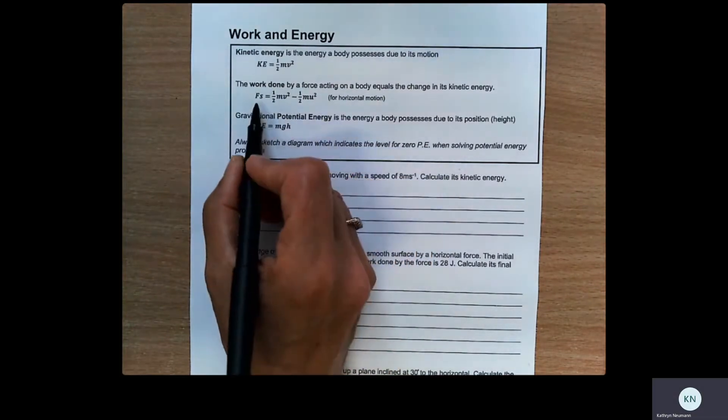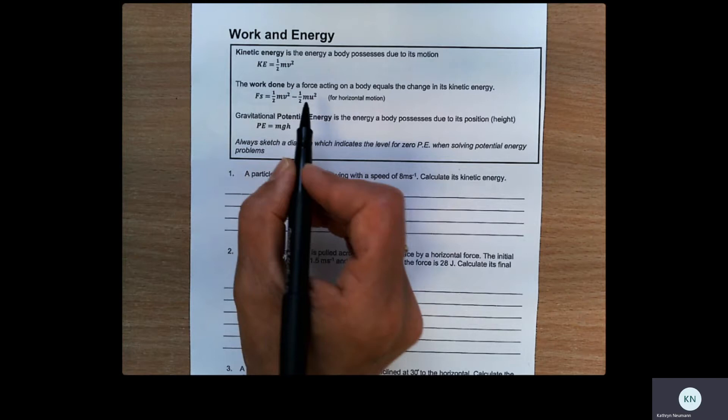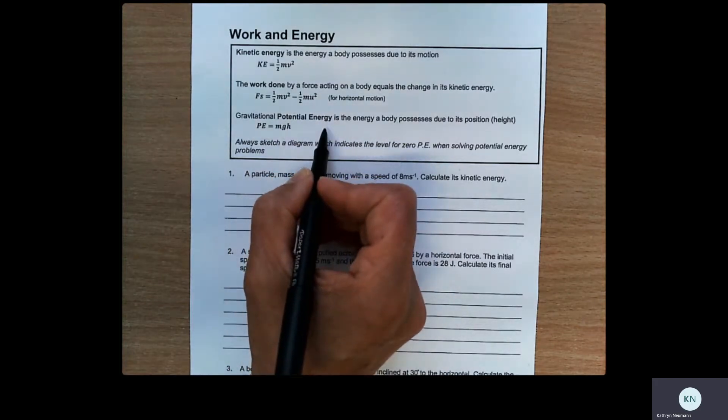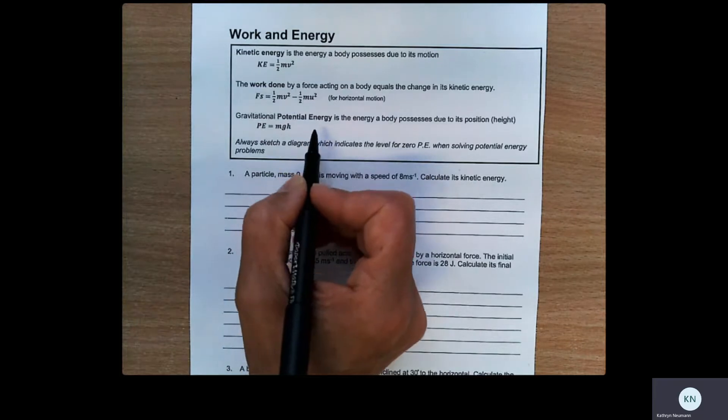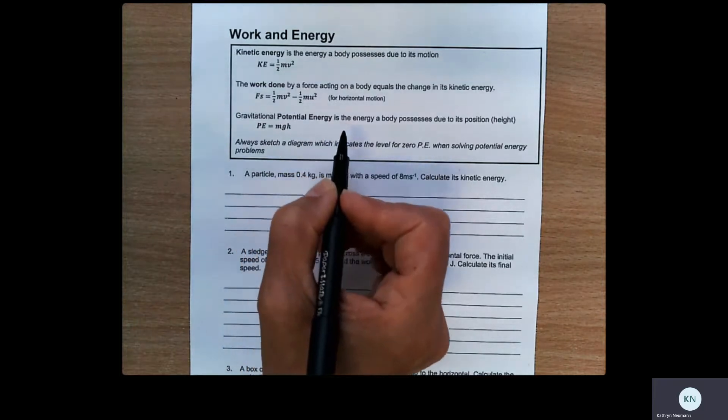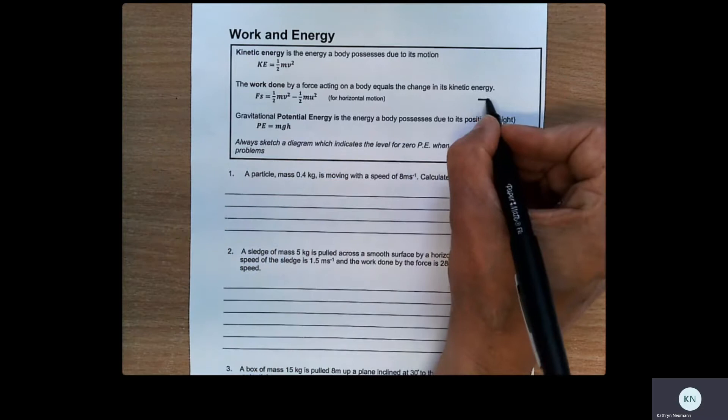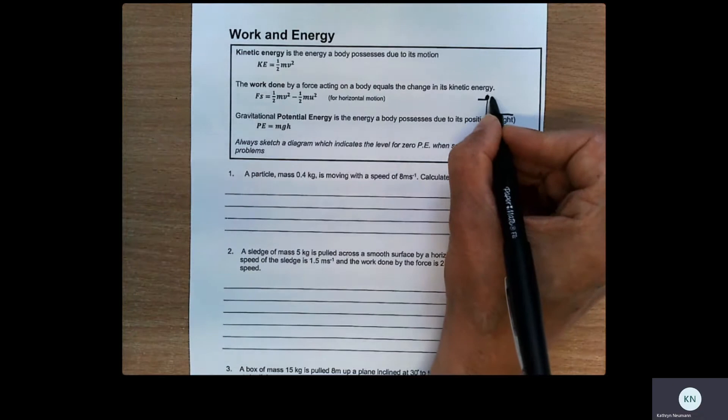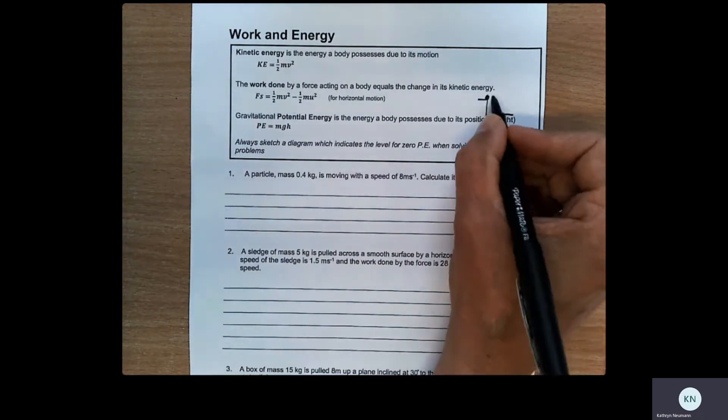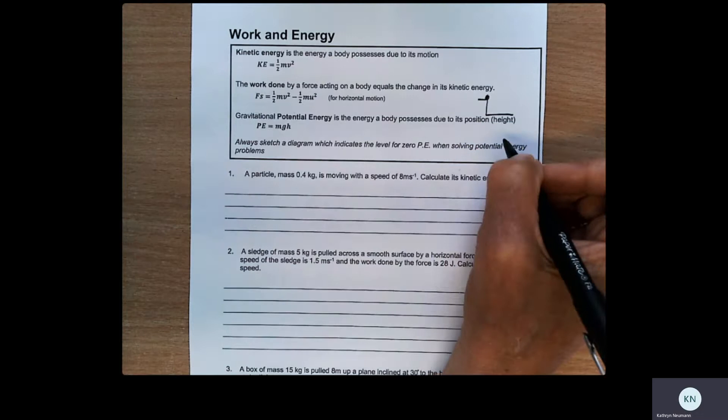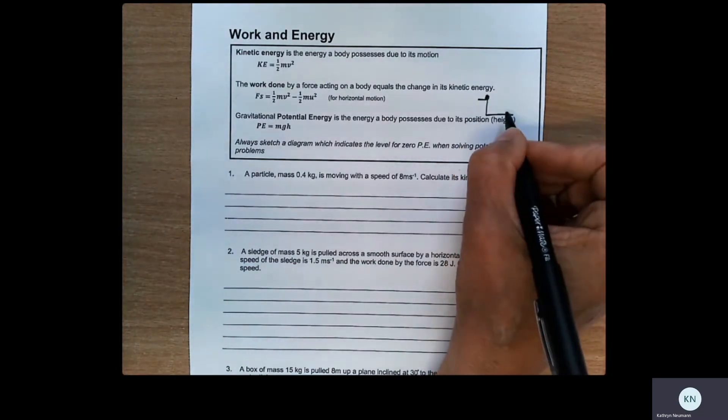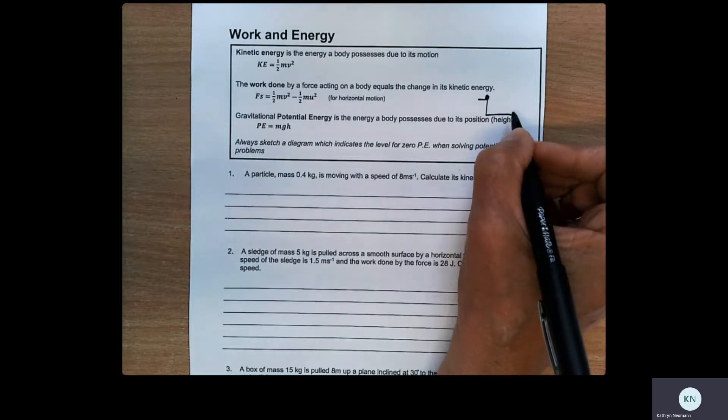Generally, work done is equal to change in energy. Gravitational potential energy is the energy a body possesses due to its position. So if you think of a table with a book resting at the top of it, that has potential energy because with the slight push, it's going to have a change in height and that's going to give it some velocity going down. So things can have an energy due to their position, and that's called their potential energy.